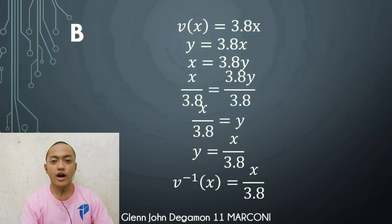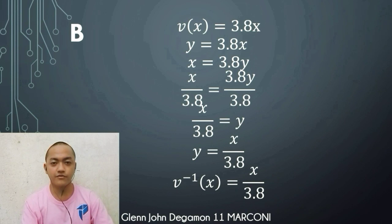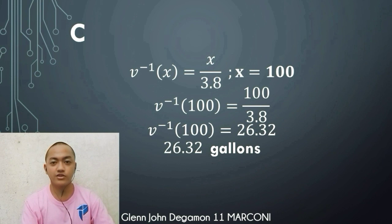For letter b, we find the inverse function. Starting with v of x equals 3.8x, substitute y for v of x: y equals 3.8x. Swap the variables: x equals 3.8y. Divide both sides by 3.8 to isolate y: y equals x over 3.8. Therefore, v inverse of x equals x over 3.8. For letter c, using the inverse function to convert 100 liters: x equals 100, so v inverse of 100 equals 100 over 3.8, which equals 26.32. Therefore, 100 liters equals 26.32 gallons.